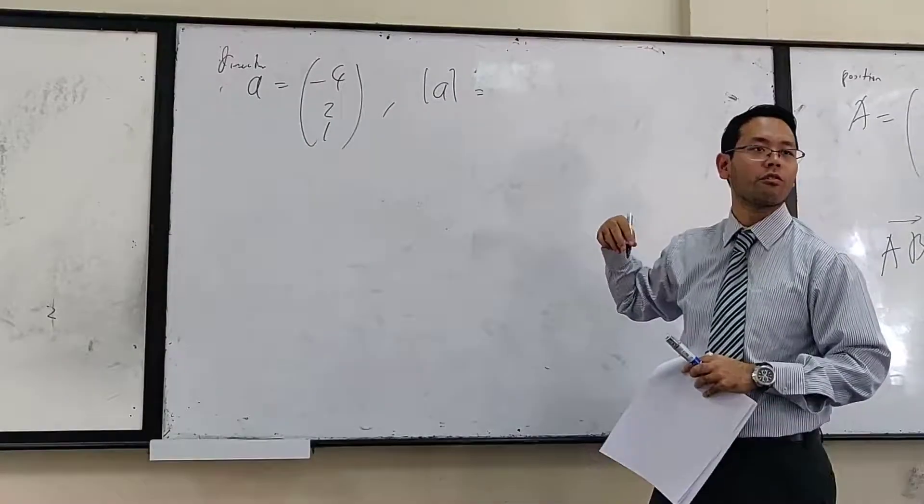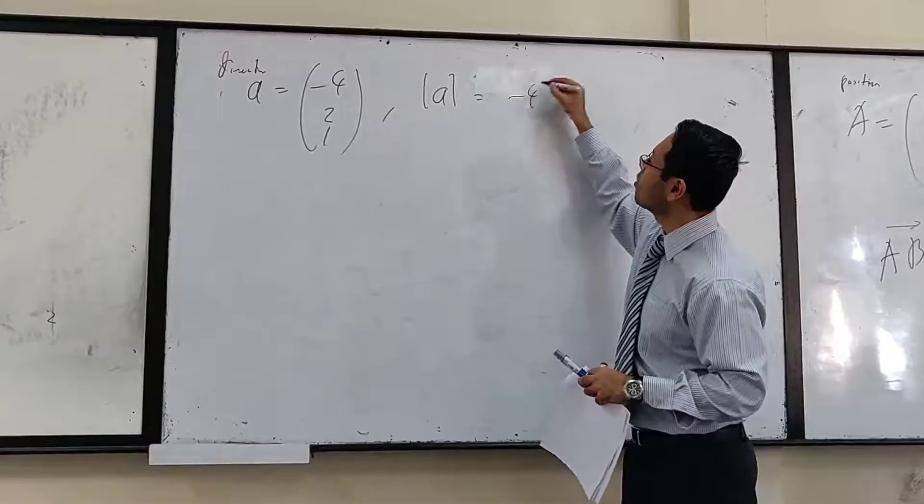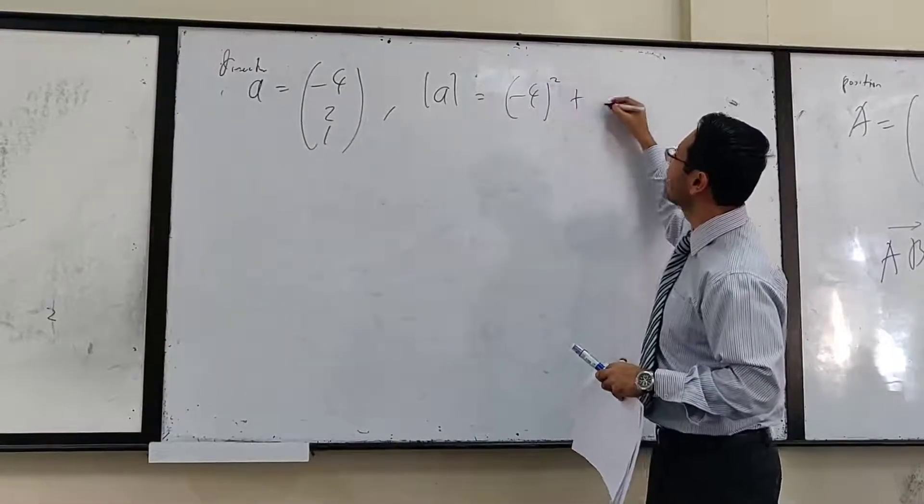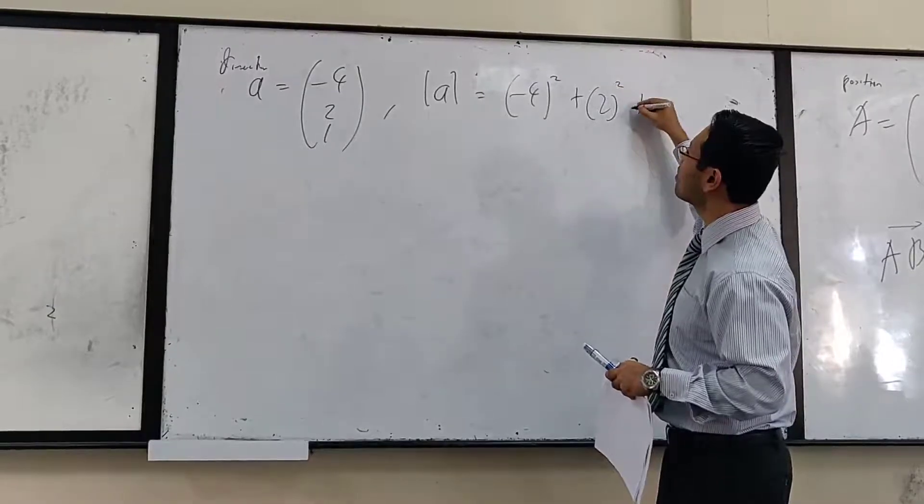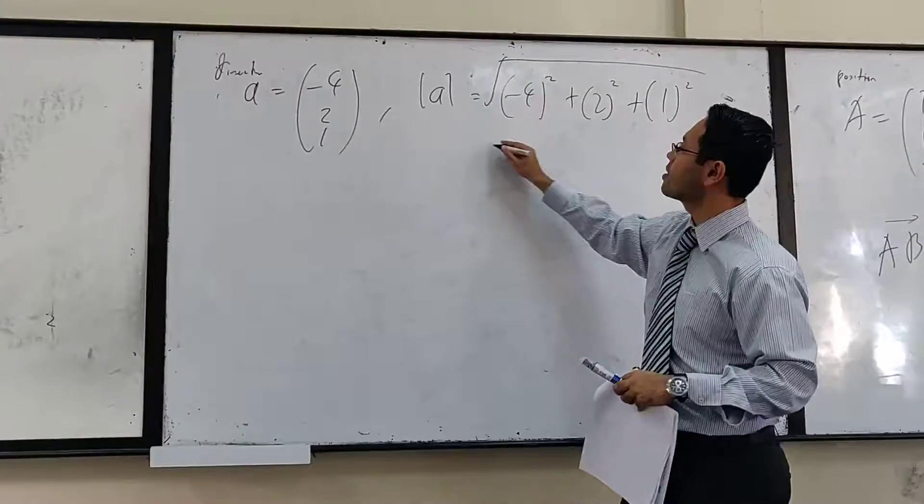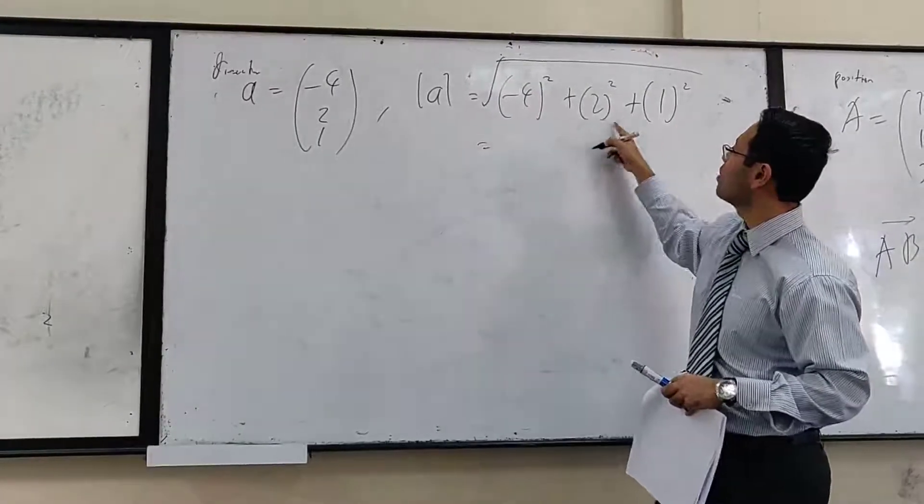Simply square, square, square and square root them. So negative 4 square, plus 2 square, plus 1 square. Square root for all of this gives us 16, 20, 21.